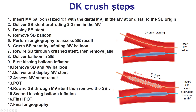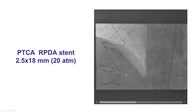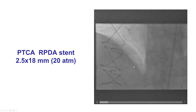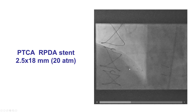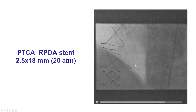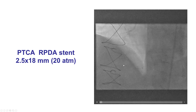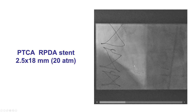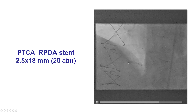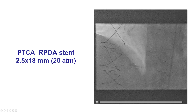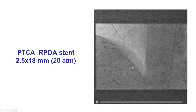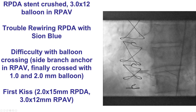We have the 17 steps of DK Crush, starting with ballooning, delivering the side branch stent, then deploying the side branch stent and removing the side branch balloon. Before crossing the stent placed in the side branch, it is important to confirm that the stent is adequately expanded. So we took a 2.5 mm NC balloon and post-dilated the stent to ensure optimal expansion. We still have the balloon in the main vessel to be able to crush the stent once we achieve an optimal result.